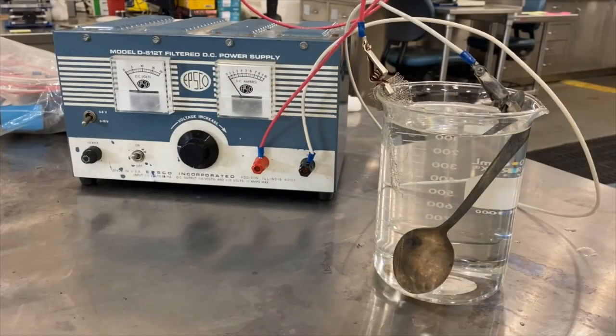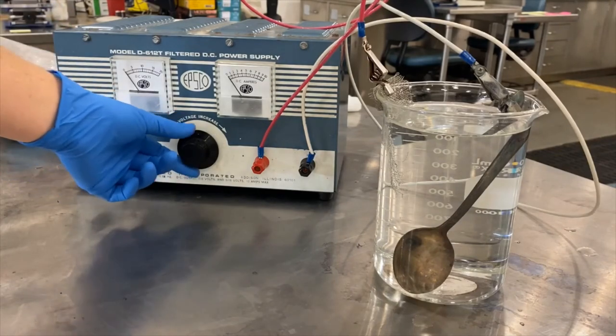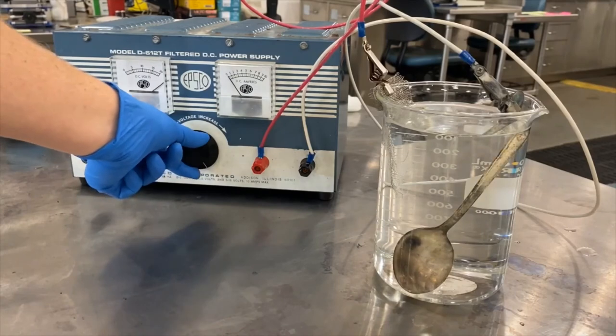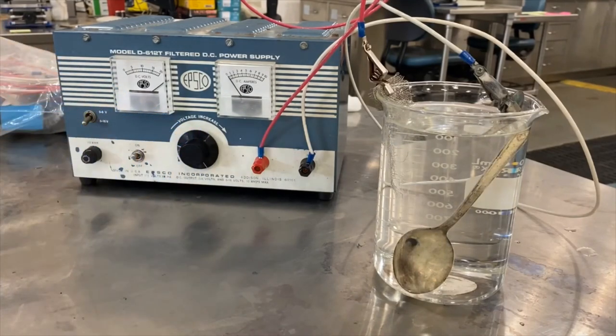If you can please direct your attention to the surface of the spoon, we're actually going to be using a much higher voltage and amperage than we would tend to employ on an archaeological artifact. But we're trying to speed up the reaction so that you can see the process very quickly. There you go. You can see how very fast that reaction can take place.